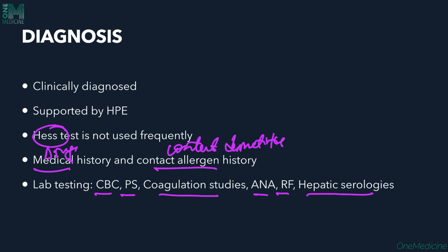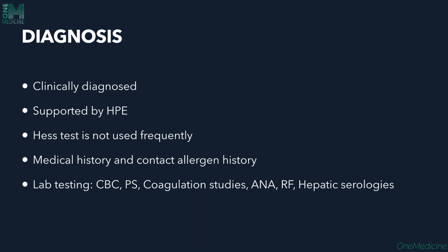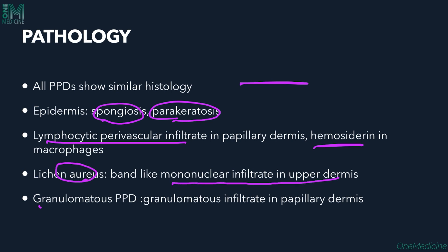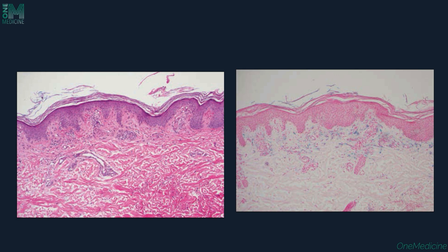Histopathologically, all PPDs show similar findings with minor variations. The epidermis shows spongiosis and parakeratosis. The dermis shows lymphocytic perivascular infiltrate and hemosiderin deposits. In lichen aureus, a band-like mononuclear infiltrate in the upper dermis is seen. In granulomatous PPD, granulomatous infiltrate in the papillary dermis is the differentiating feature. Prussian blue staining highlights hemosiderin deposition.